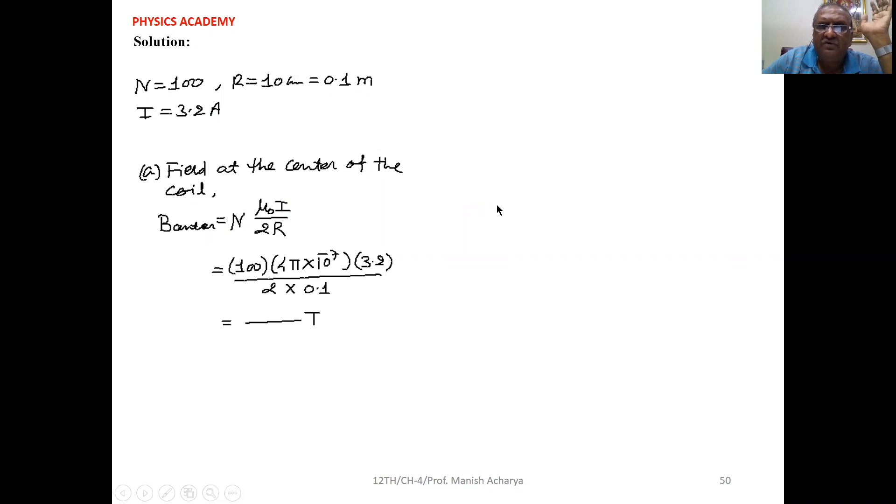We have the equation for the field at the center of the current carrying coil: B = μ₀I/2R. If it has N number of turns, then we have to multiply by N.